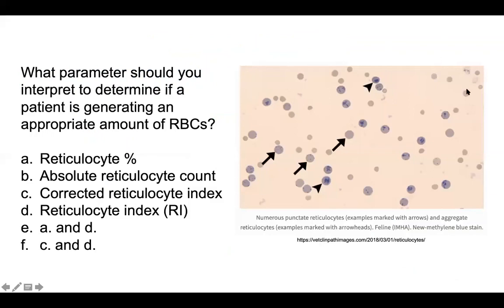What parameters should you interpret to determine if a patient is generating an appropriate amount of RBCs? On the right side you have some reticulocytes with arrow signs. Is it the reticulocyte percentage, the absolute retic count, the corrected reticulocyte index, the reticulocyte index, or some combination?